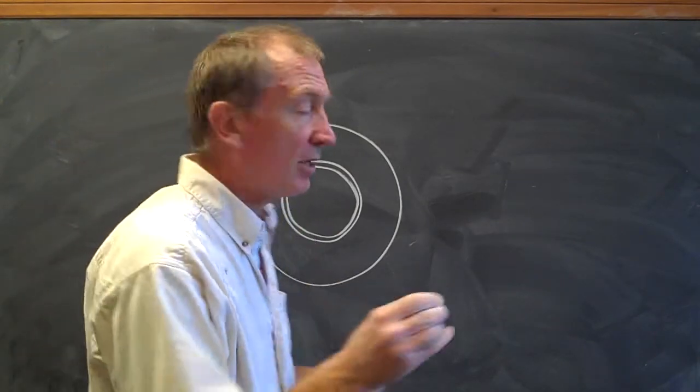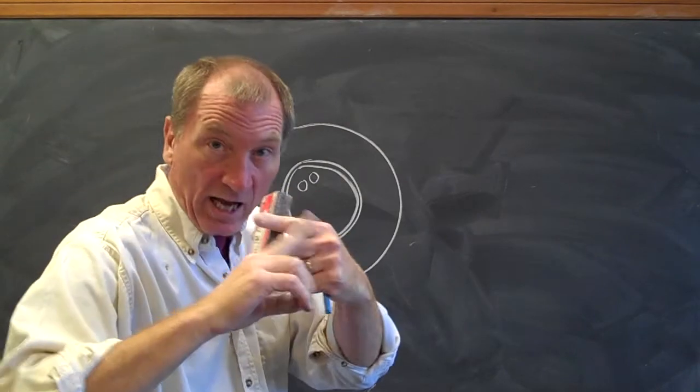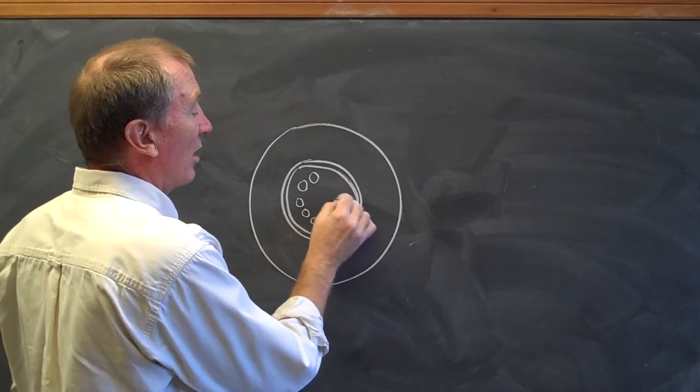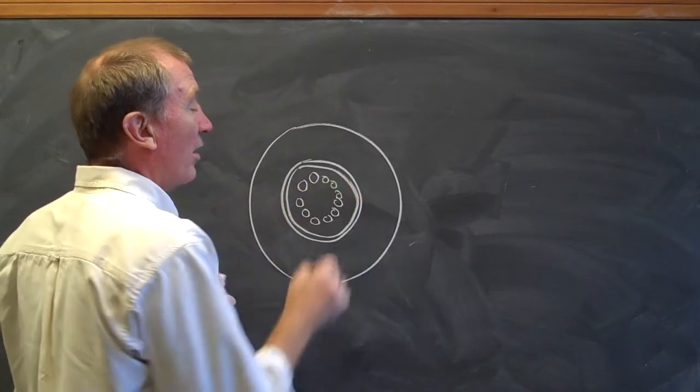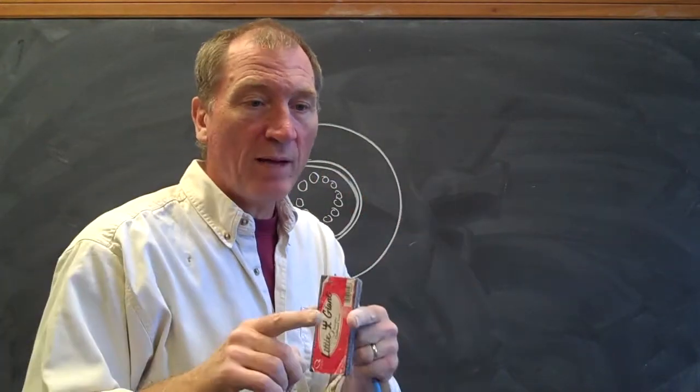So in particular, the xylem, instead of being X-shaped in the middle, are bundles that are organized as a circle around the inside of the vascular system.